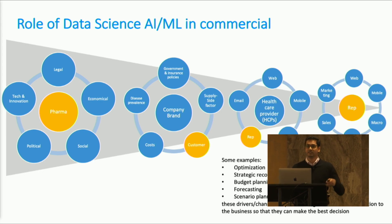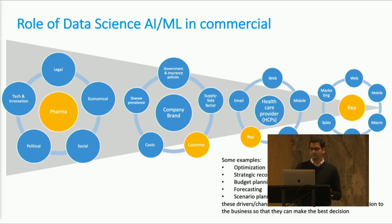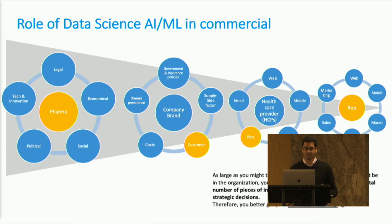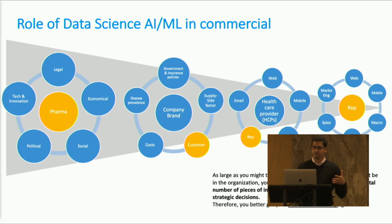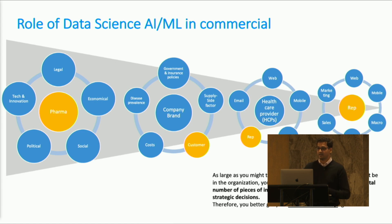Within commercial, the role of data science is working at the most granular levels — forecasting, budget planning, and strategic recommendations — trying to optimize drivers so we can give the business the most actionable insights. However, as large as your department might be within a pharma company, you're still making a very small contribution to the total information used to make a strategic decision. Ideally we'd move toward a more data-driven company, but we're not there yet.